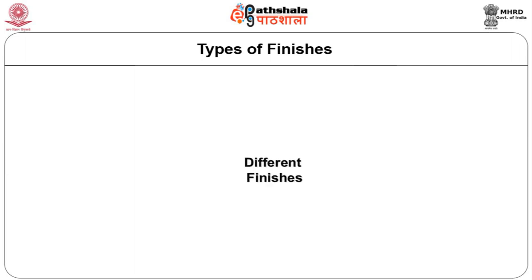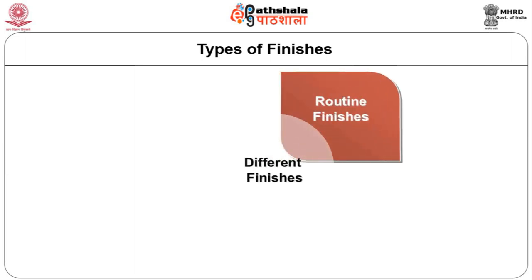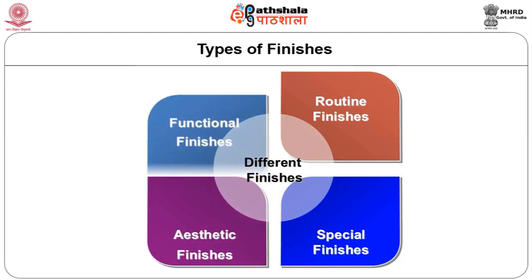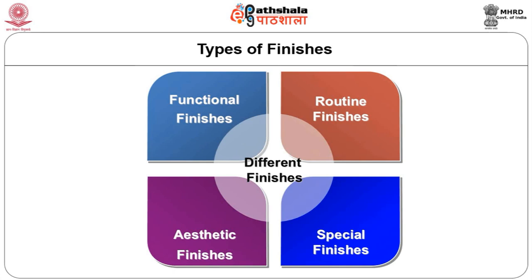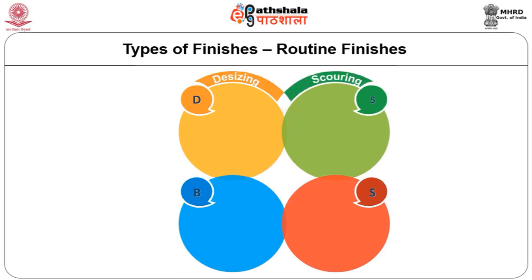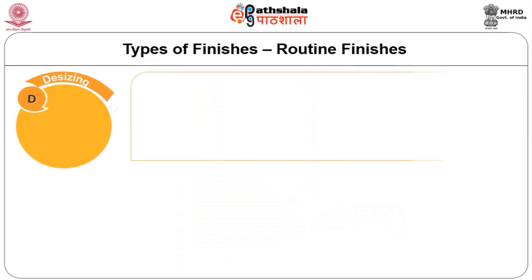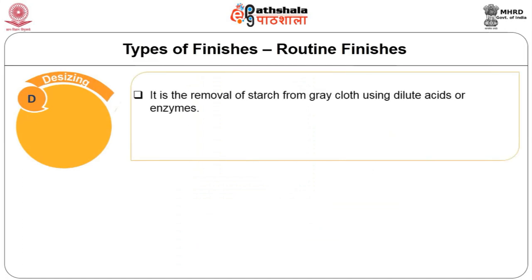For easy categorization, finishes can be grouped as routine finishes, special finishes, aesthetic finishes and functional finishes. Routine finishes are treatments given to all fabrics and include desizing, scouring, bleaching, singeing and biopolishing. Desizing is the removal of starch from grey cloth using dilute acids or enzymes; it is done to achieve even dyeing.